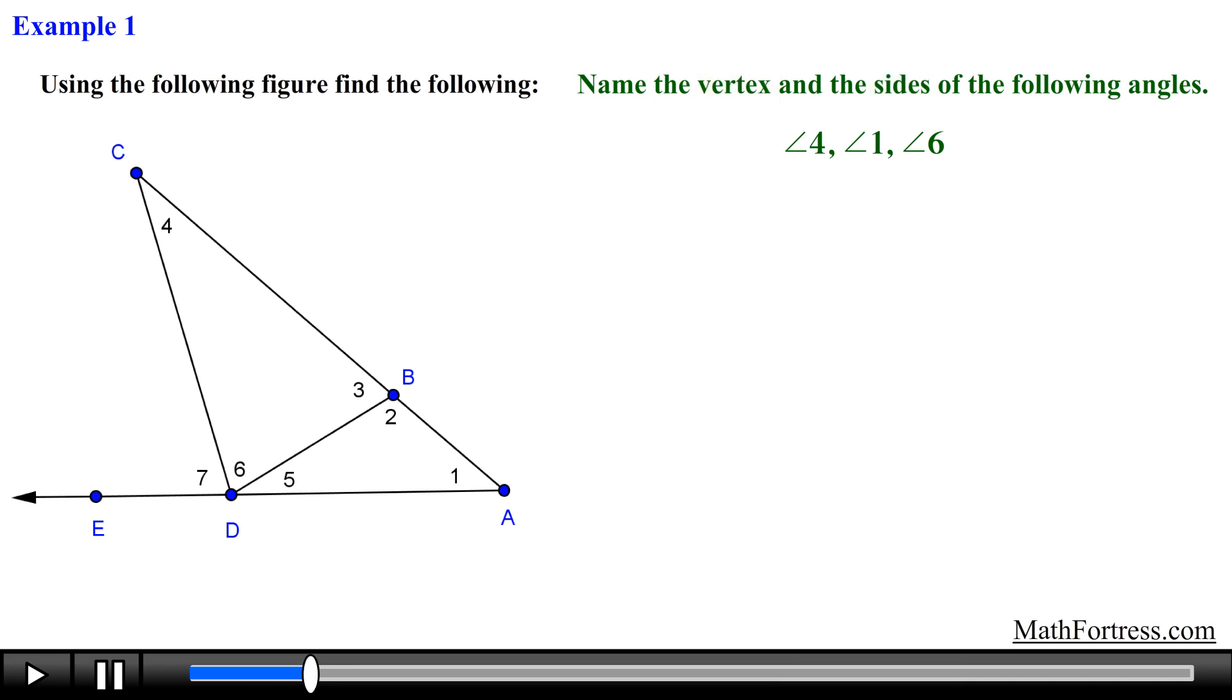Angle 4 is located here and its vertex is represented by point C. Now the sides of the angle are formed by rays CD and CB. Notice that ray CB can also be named as ray CA since both points B and A are located on the same line segment. So this ray can be named in both ways, as long as you denote the vertex C first followed by point B or A.